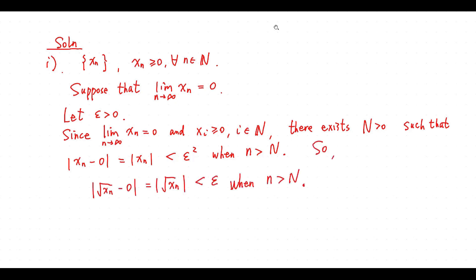When n is greater than big N, this gives us the required inequality. This implies the limit of √x_n equals 0.